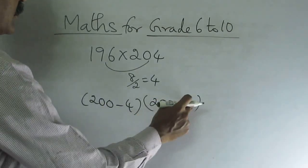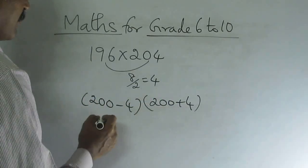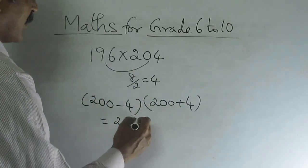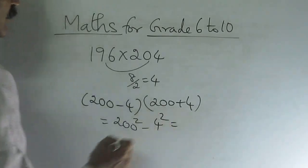So 200 plus 4 into 200 minus 4. A plus B into A minus B. It's nothing but A square minus B square. 200 square minus 4 square.